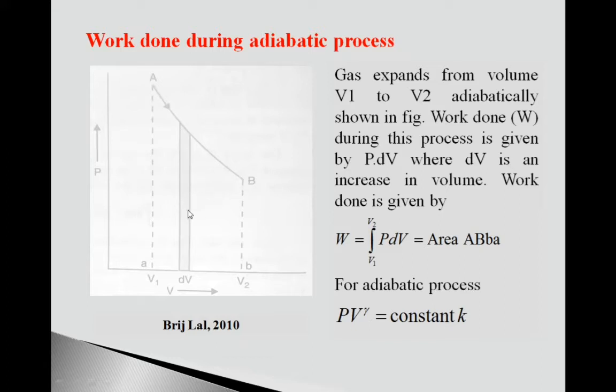And work done during this process is given by PdV. P is the pressure and dV is this small volume, increasing small volume dV. If we get product of this P and dV, this is the work done during this adiabatic process from A to B.